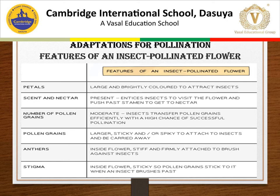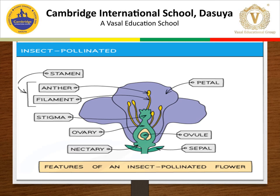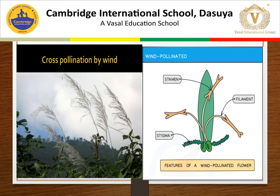What are the adaptations for pollination? We will discuss the features of the insect-pollinated flower. Petals are very large and brightly colored to attract insects. Nectar is present, and insects visit the flower and push past the stamen to get nectar. Pollen grains are moderate in number — insects transfer pollen grains efficiently with a high chance of successful pollination. Pollen grains are large, sticky, and spiky to attach to insects and be carried away. Inside the flower, stamen are stiff and firmly attached so they brush against insects. The stigma inside the flower is sticky so pollen grains stick to it when an insect brushes past. Here you can see the diagram showing everything I discussed — the features of insect-pollinated flowers.